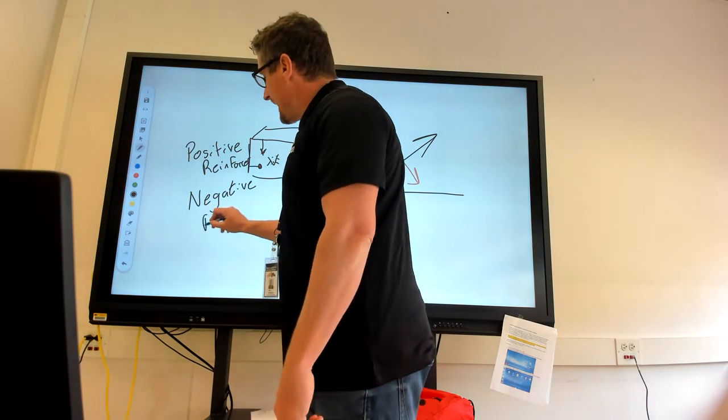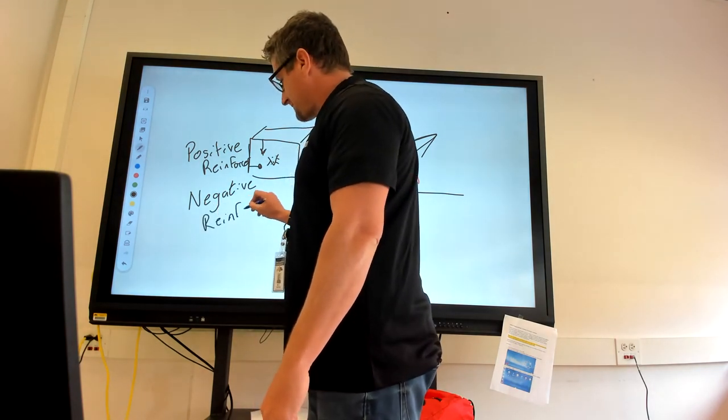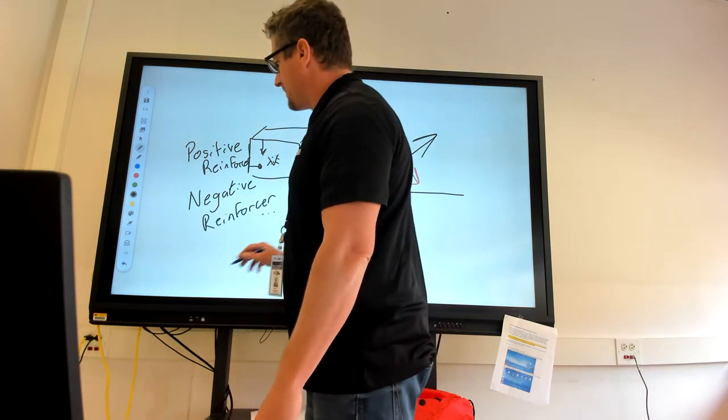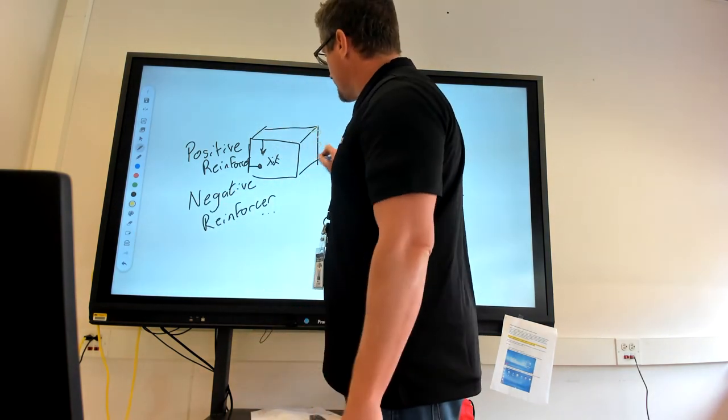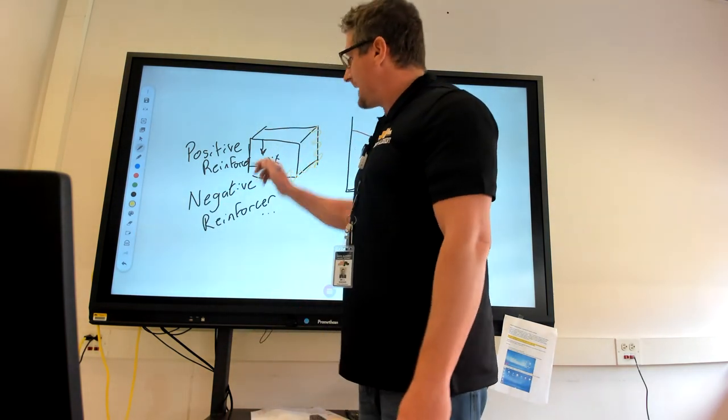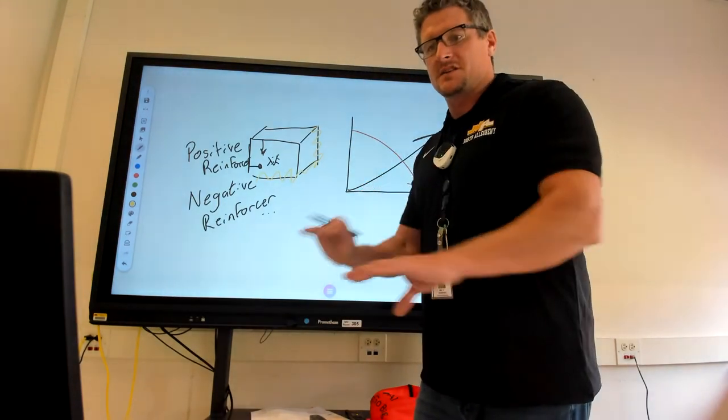So my negative reinforcer would be if I took the idea of electricity again and I electrify the whole box. And if the rat hits the lever, the electricity stops.